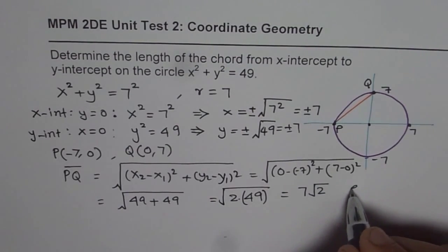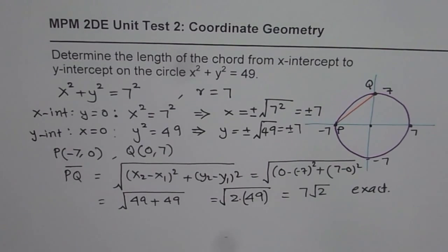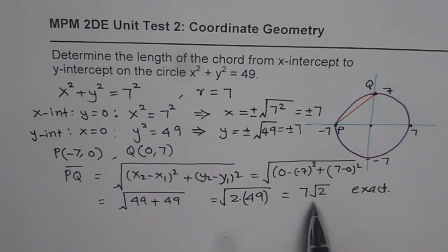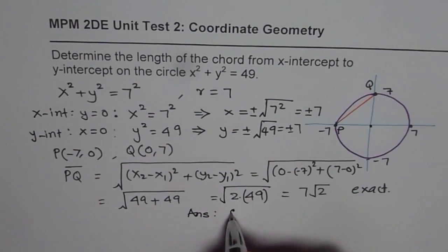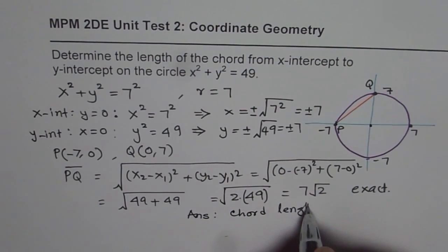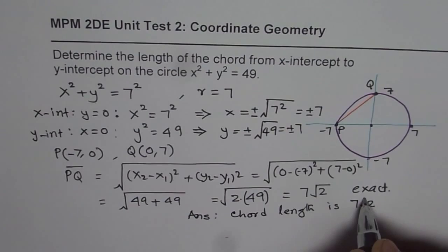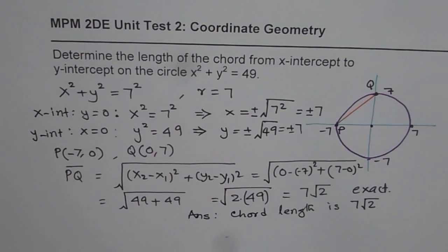So it is preferred to write the exact value. If sometimes they say write to 2 decimal places, then you can find answer to 2 or 3, whatever the question is saying. At present, we can say our answer is the chord length is 7√2. So that is how you can solve such questions. I hope you understand and appreciate it. Thank you and all the best.